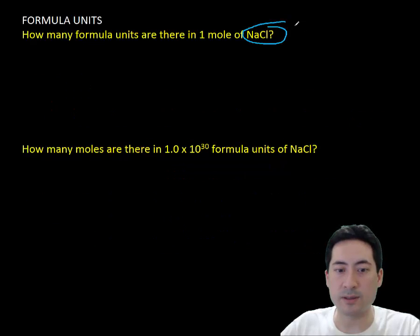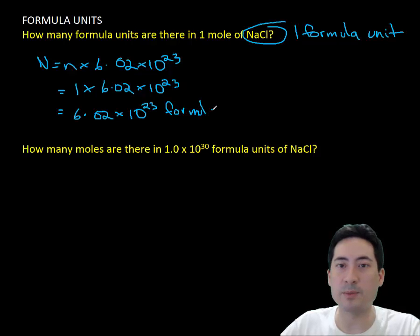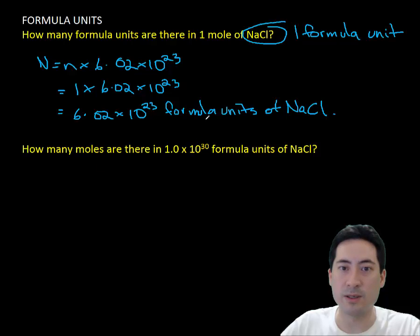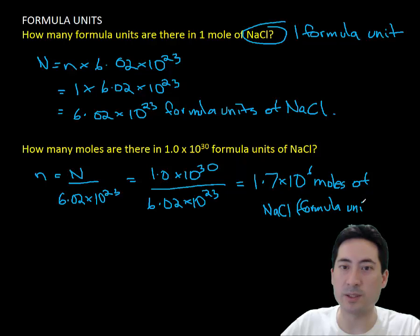Lastly, formula units. This one's important because you need to realize what a formula unit is. The basic smallest whole number ratio of an ionic compound. If you're given the chemical formula, the formula unit is that chemical formula. So that works out to 6.02 by 10 to the 23 formula units of NaCl in one mole of NaCl. And working the other way around, if you've got 1 by 10 to the 30 formula units of NaCl, that works out to 1.7 by 10 to the 6 moles of NaCl formula units.